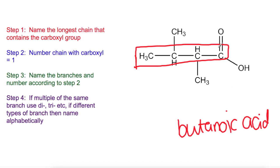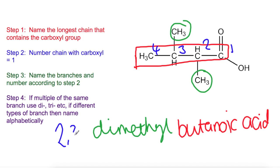Number the chain, always starting from the end with the carboxyl. So 1, 2, 3, 4. And then have a look at the branches that you have. So again, we've got two branches, both of them the same. So it's going to be a dimethyl again. But this time, the two methyl groups are present on different carbons. So we've got two and three. So we'll have 2,3-dimethylbutanoic acid.